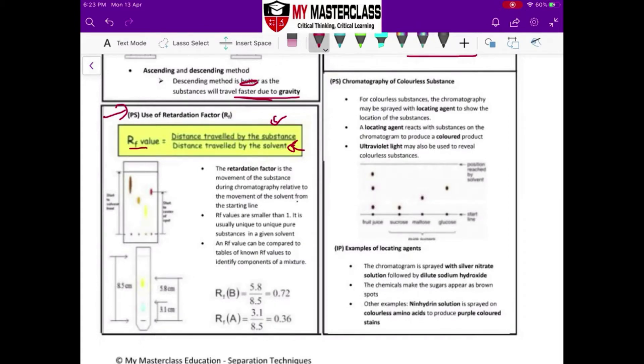And your RF value is always calculated from the starting line. So for example, in this case, my starting line is over here. My solvent front is over here.